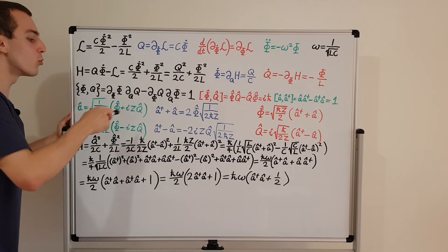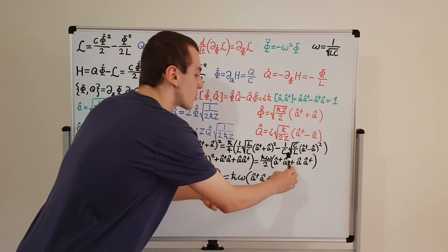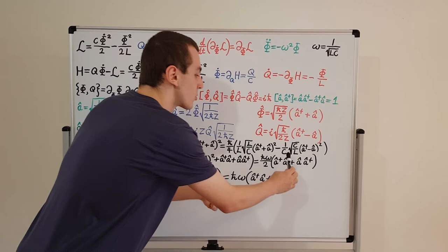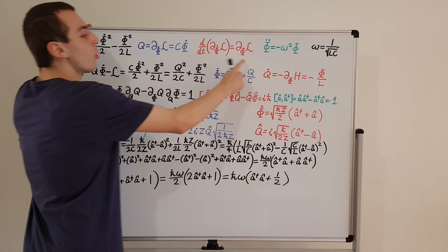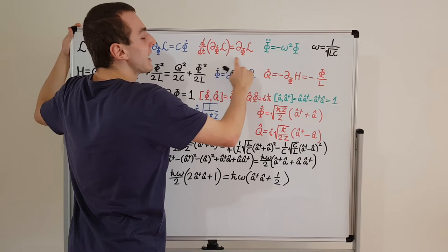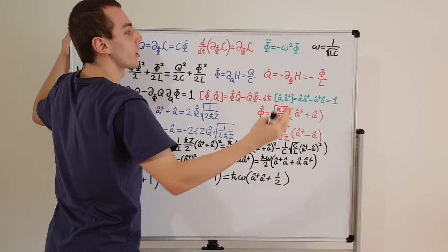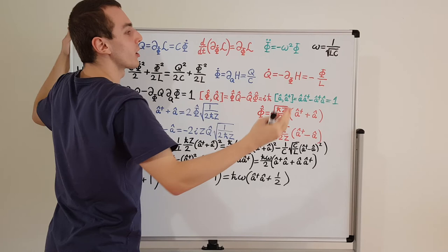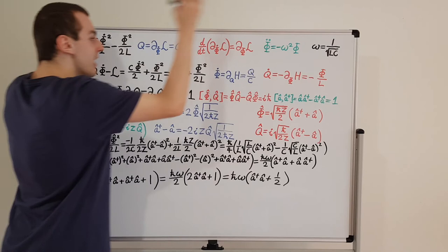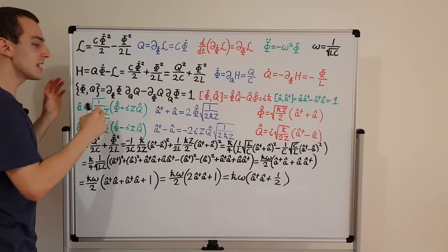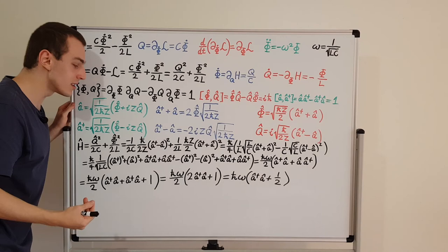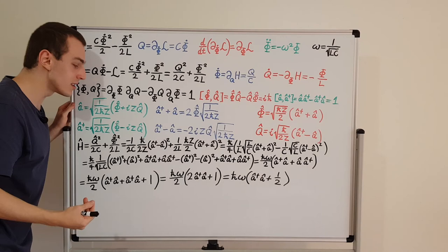Also remember that capital Z is the square root of L over C. When we take the reciprocal, it's the square root of C over L. So the takeaway message is that we started with classical mechanics, wrote down the Lagrangian, found the canonically conjugate coordinate, used the Euler-Lagrange equation to find the equation of motion — a second-order differential equation — the same as the simple harmonic oscillator. We used this to define omega.